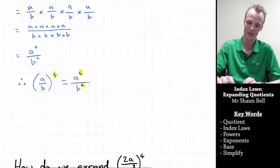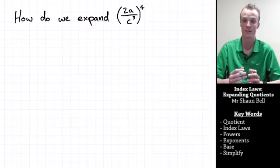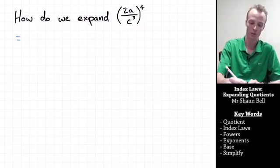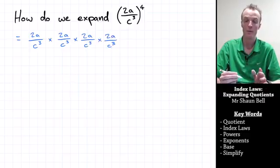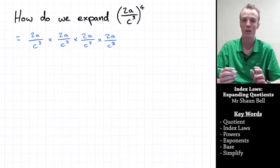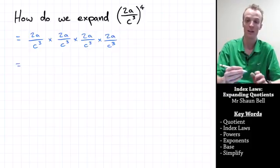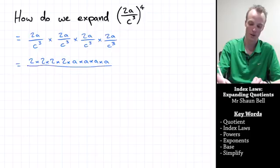Let's take a look at one more problem to see whether it's always as simple as this. What if we want to expand the quotient of 2a over c to the third power, all raised to the power of 4? When we expand this, it is equal to 2a over c to the third power multiplied by itself 4 times. When we're multiplying fractions together, we multiply the numerators and the denominators together. Because the numerator is nothing but multiplication, we can order it in any order we want, so I'm going to collect the like terms.